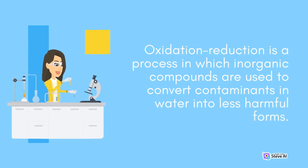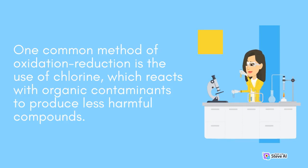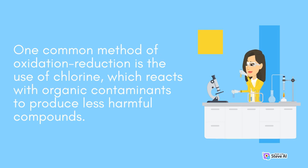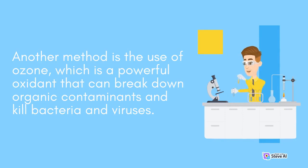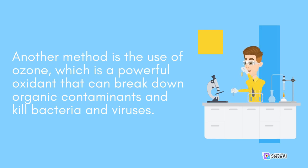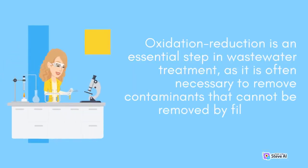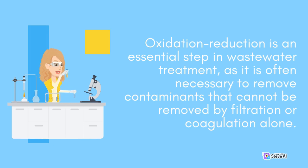Oxidation reduction is a process in which inorganic compounds are used to convert contaminants in water into less harmful forms. One common method is the use of chlorine, which reacts with organic contaminants to produce less harmful compounds. Another method is the use of ozone, which is a powerful oxidant that can break down organic contaminants and kill bacteria and viruses. Oxidation reduction is an essential step in wastewater treatment, as it removes contaminants that cannot be removed by filtration or coagulation alone.